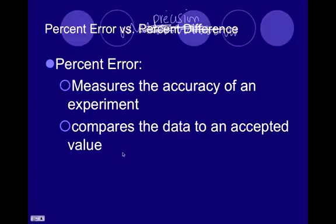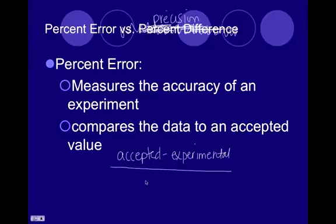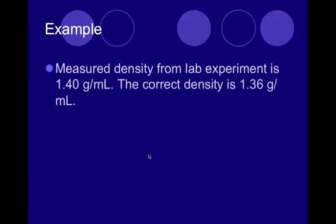The accuracy is measured by taking the accepted value minus the experimental, divide that by the accepted, take the absolute value of this guy and multiply by 100, and that gives you your percent error.